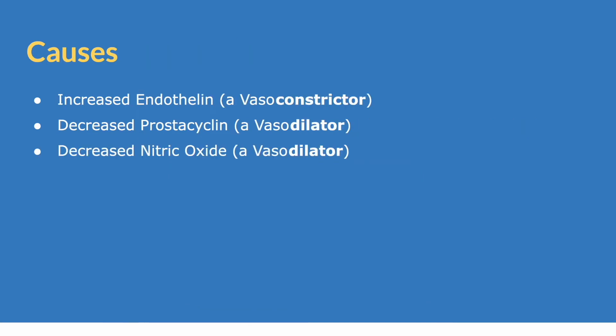There are three main causes that contribute towards pulmonary hypertension: increased endothelin, decreased prostacyclin, and decreased nitric oxide. Endothelin is a vasoconstrictor, so increasing it is very problematic. Prostacyclin and nitric oxide are vasodilators, so decreasing these is another major cause of pulmonary hypertension.